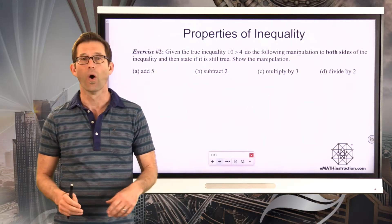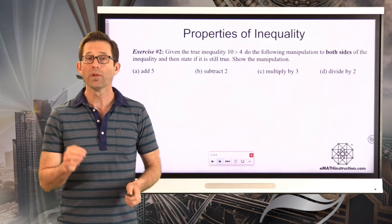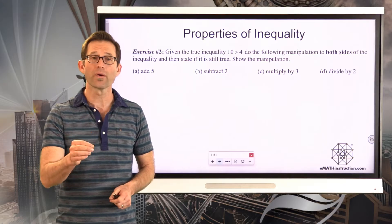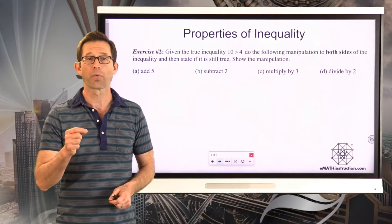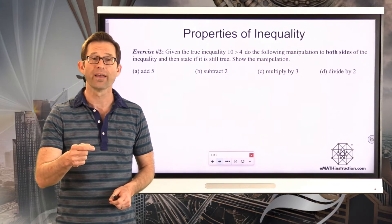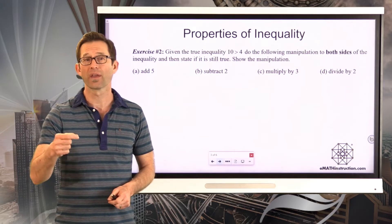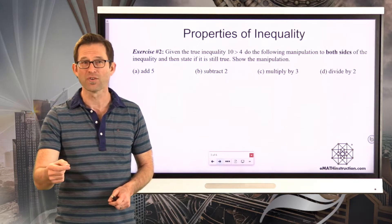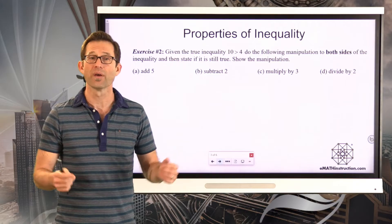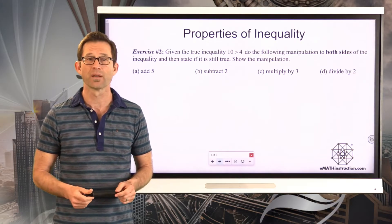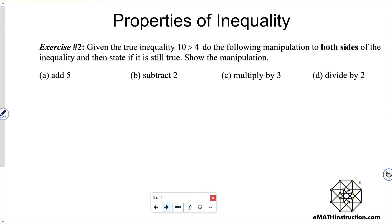Properties of inequality. We looked at properties of equality earlier in this unit and used those properties to justify steps to solving an equation. Now let's look at the same thing for inequalities. Exercise number two: given the true inequality 10 is greater than 4, do the following manipulations to both sides and state if it's still true.